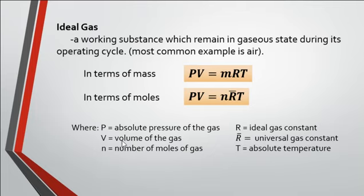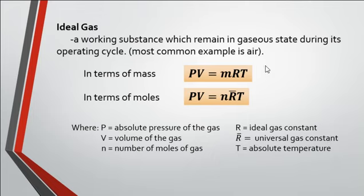P is the absolute pressure, V is the volume of the gas, N is the number of moles of gas, R is the ideal gas constant, while R̄ is the universal gas constant, and T must be absolute temperature. Every ideal gas has its own unique ideal gas constant, but there is only one universal gas constant.